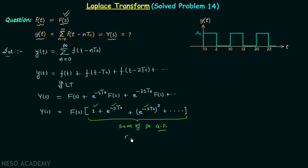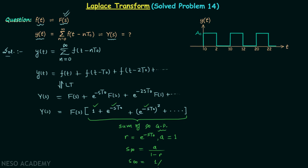The common ratio is equal to e^(−st₀), which you get by dividing any term by the preceding term. Therefore we have the sum of infinite terms of a GP. We know the sum of an infinite GP equals a over (1 minus r), where a is the first term and r is the common ratio. The first term is equal to 1, and the common ratio is e^(−st₀), so the sum of the infinite GP equals 1 over (1 minus e^(−st₀)).